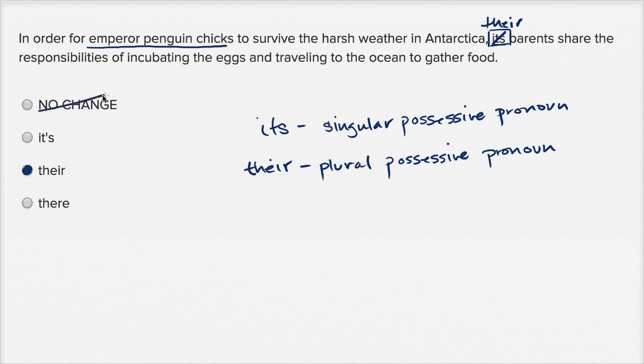So once again we rule out this one because that would be if we're talking about one penguin chick's parents. We're talking about many penguin chick's parents. And so an it with an apostrophe s. You might be tempted to think that this is possessive. And this would still, even if you were confusing it with its right over here. This one actually here is the contraction. So it apostrophe s is a contraction for it. It is.